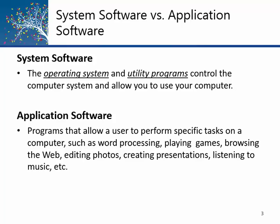System software is the topic of chapter 5; application software is the topic of chapter 6. The difference is that system software is what operates the system. The operating system and utility programs together operate the system — they don't do anything productive on their own. You don't write research papers with the operating system; that's an application program. You don't surf the web or edit a photo with the operating system — those are application programs like a web browser or Photoshop.